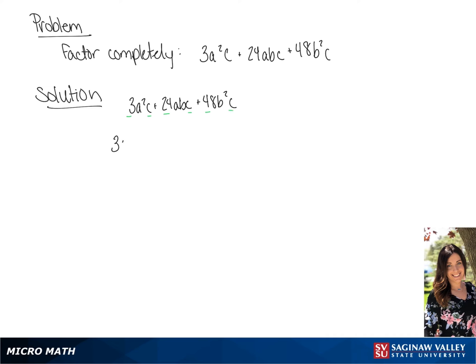So we are going to pull that out. This leaves us with a squared plus 8ab plus 16b squared. We are going to further factor this and split it up into two binomials.